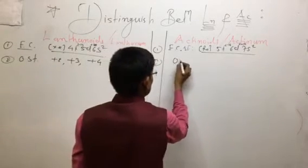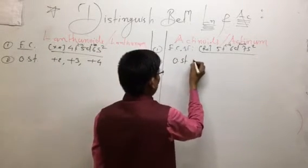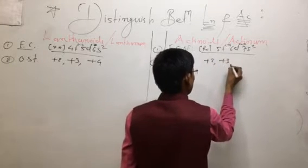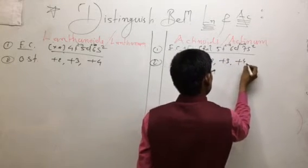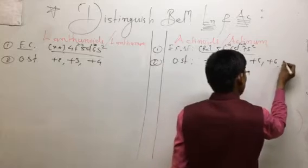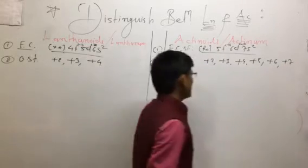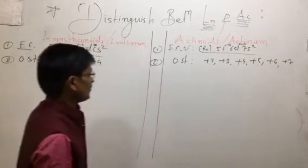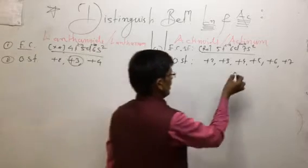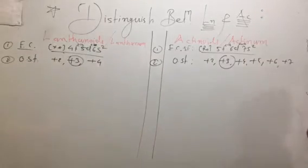For the actinoid series, the oxidation states shown range from +2, +3, +4, +5, +6, up to +7. The actinoids show a wider range of oxidation states. The common oxidation state for actinoids is +3.